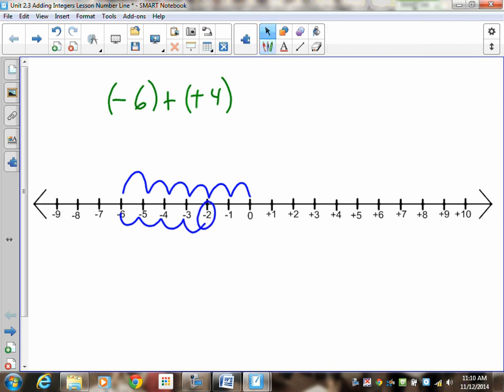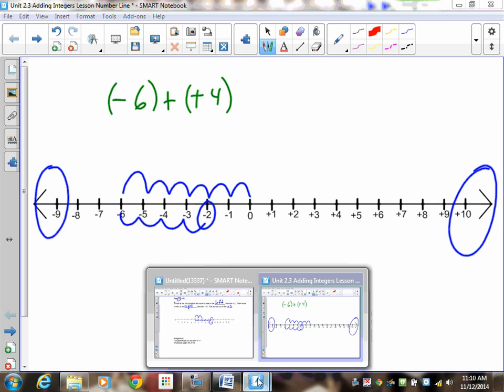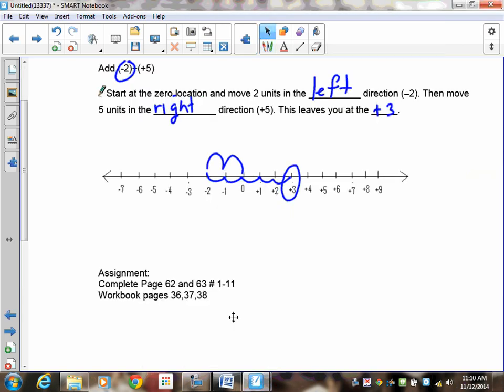So if you have a stack of number lines, doing addition of integers on number lines is really easy. The one problem you might encounter on your assignment is that sometimes the answers go beyond your number line. Sometimes they can be beyond positive 10 or beyond negative 9. In which case, if you have room, just extend your number line over so that you can make it work. Okay, so that takes us to the end of this lesson. If you have any questions, you can come and see me.